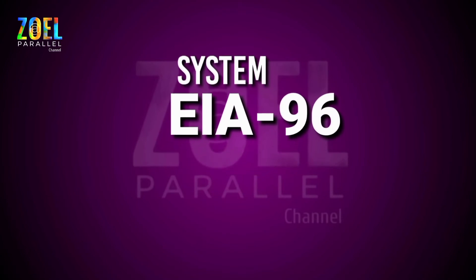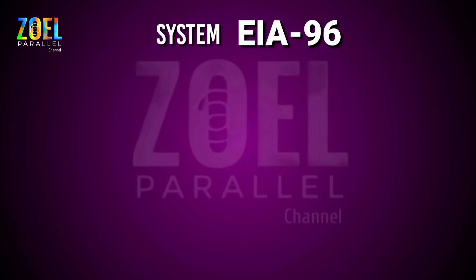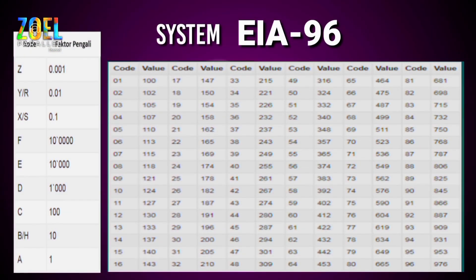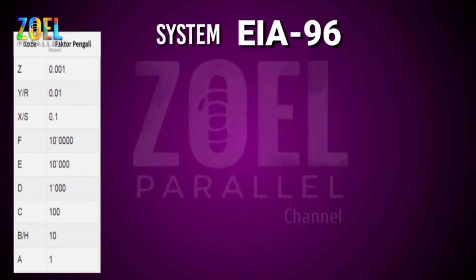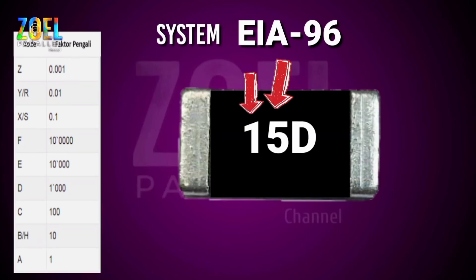Sistem EIA-96. Untuk mengetahui nilai dari resistor dengan pengkodean EIA-96, kita perlu melihat tabel berikut. Sistem pengkodean EIA-96 digunakan untuk resistor dengan nilai resistansi yang sangat presisi dan dengan toleransi kesalahan 1%. Dalam sistem ini terdapat 3 digit angka dan huruf — digit angka pertama dan kedua adalah kode nilai resistansi, dan huruf paling kanan menunjukkan faktor pengali, pangkat dari 10 atau banyaknya jumlah 0.